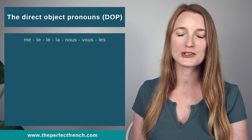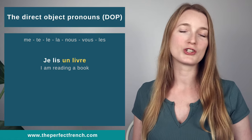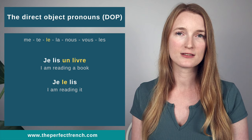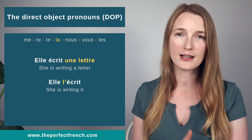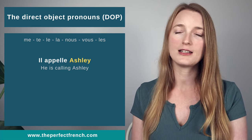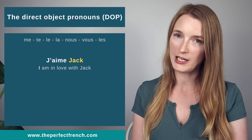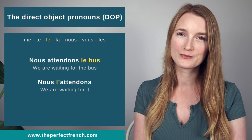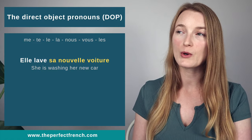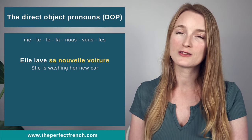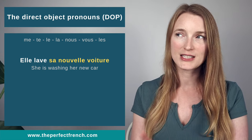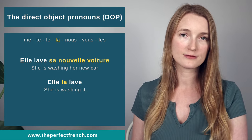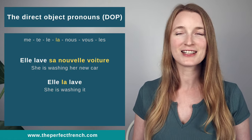Let's see a few sentences and replace the direct object with a direct object pronoun. Je lis un livre → Je le lis. Elle écrit une lettre → Elle l'écrit. Il appelle Ashley → Il l'appelle. J'aime Jack → Je l'aime. Nous attendons le bus → Nous l'attendons. We can also have an adjective in there: Elle lave sa nouvelle voiture — sa nouvelle voiture is the direct object — becomes Elle la lave. It's pretty easy.